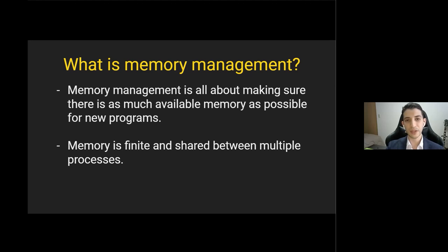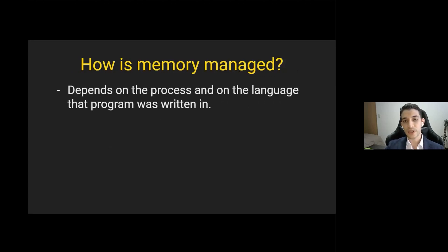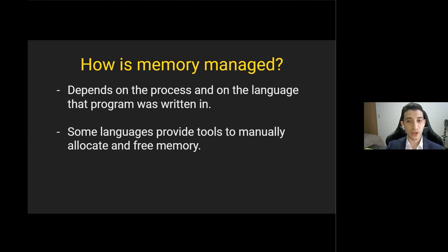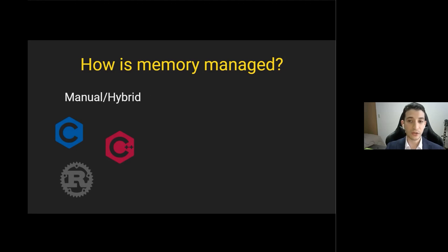As long as we are requesting and using exactly the amount of memory we strictly need, that's fine. Depending on the language a program is written in, memory will be managed differently. Some languages give you tools to be very strict with how you manage memory, while others do it automatically. Examples of languages that allow you to manually manage memory are C, C++, and Rust. These languages have specific functions that allow you to allocate memory when you need it or free it up when you don't.